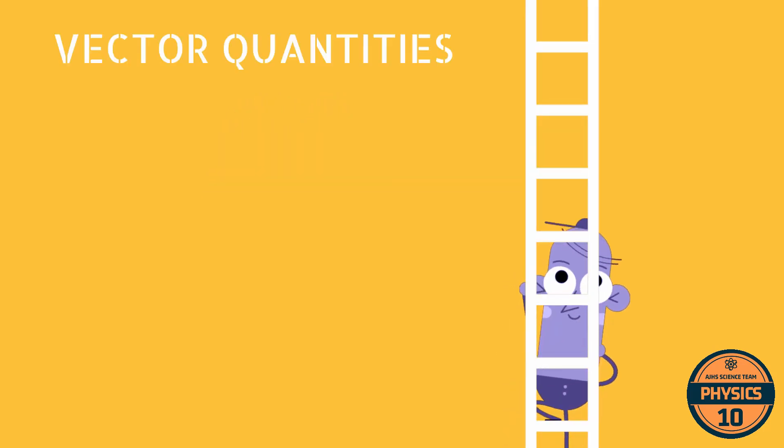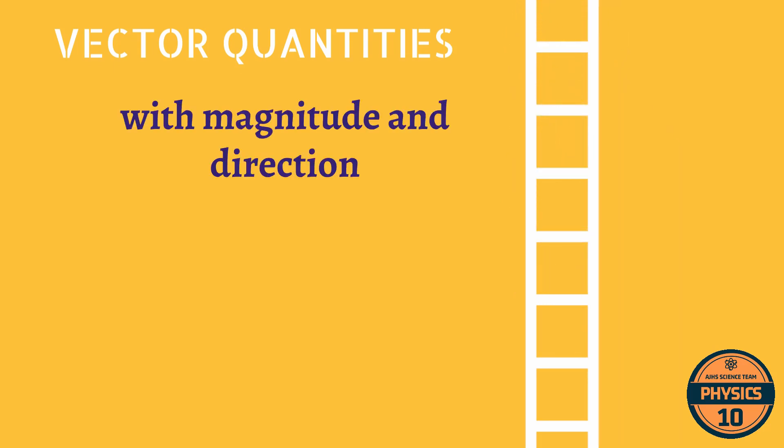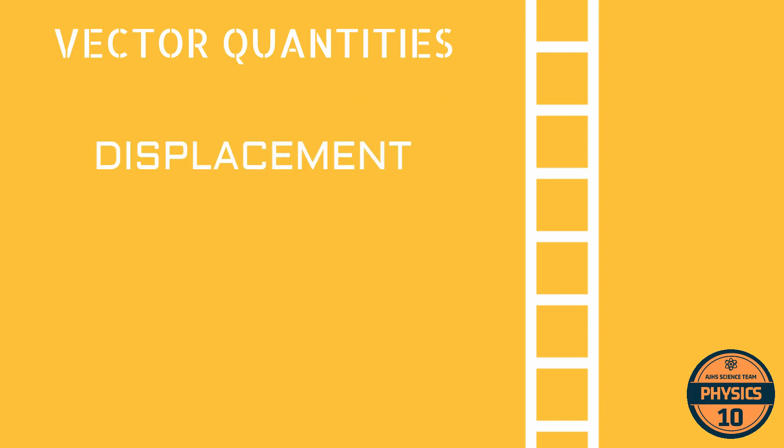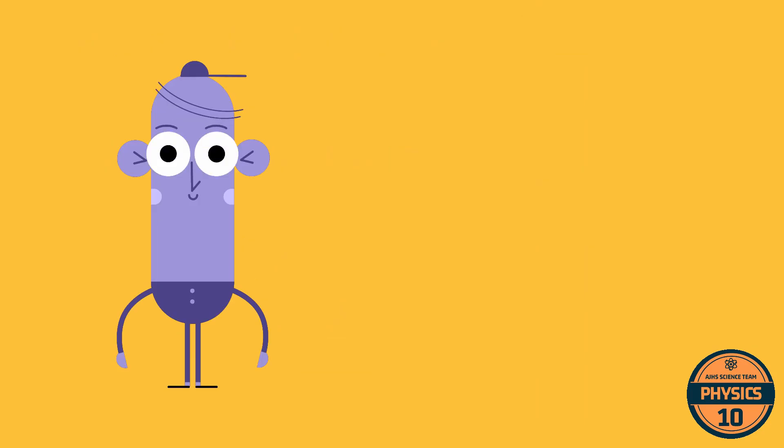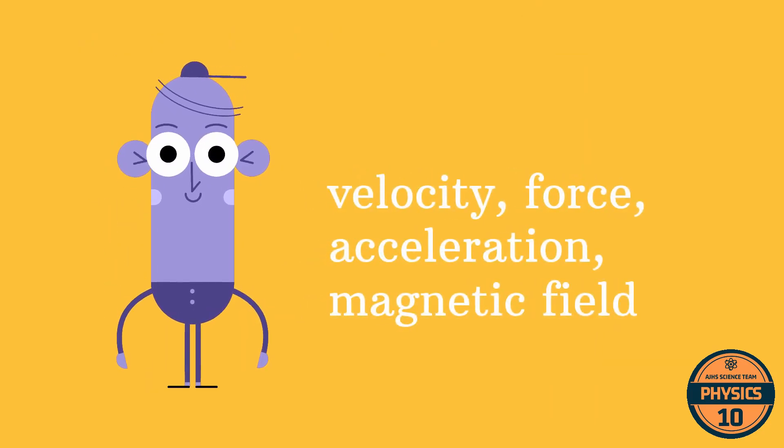We use vectors everyday when we talk about the physical quantities that have direction. Vectors are defined as quantities with both magnitude and direction. The simplest kind of these quantities is the displacement vector. It shows how far and in which direction something has moved. Similarly, velocity, force, acceleration, and magnetic field are all examples of vectors.